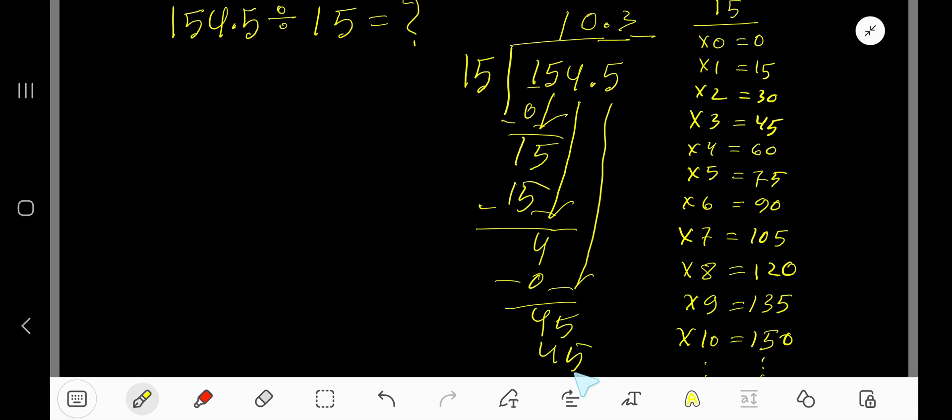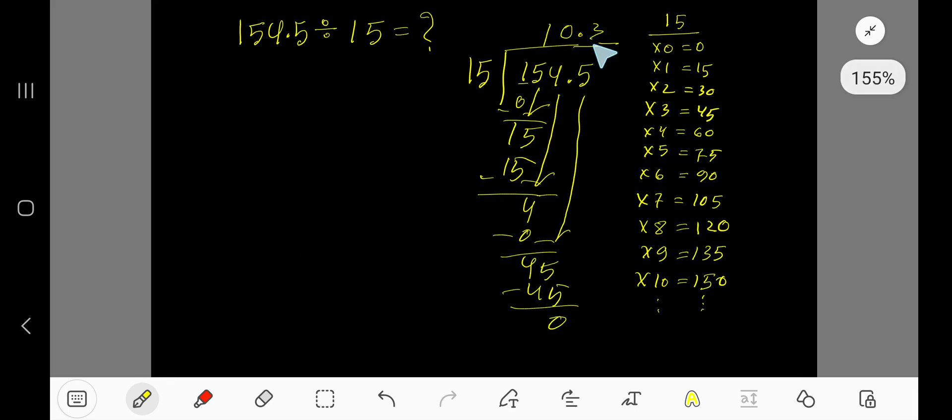So 3 times 15 gives you 45. Subtract, you are getting zero.